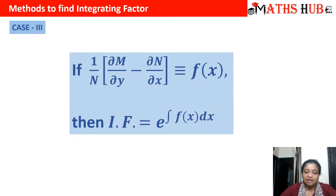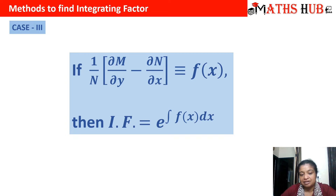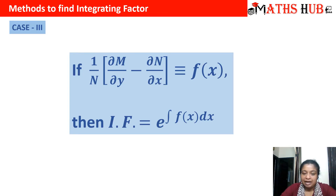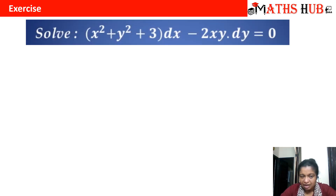The third case of the integrating factor is when we have (1/N)(∂M/∂y − ∂N/∂x) and it becomes equal to some function of x. In that case the integrating factor is e raised to power integral f(x) dx. We need these two terms to calculate exactness, take the difference, and divide by N — it should be a function in x only.